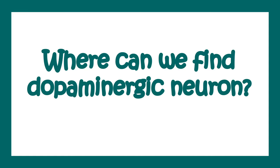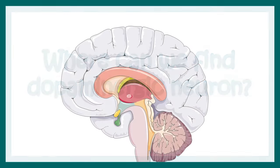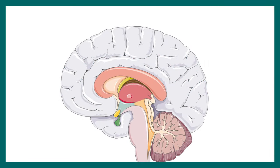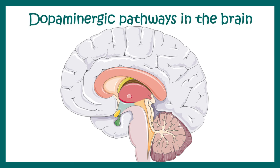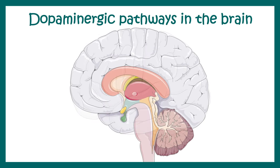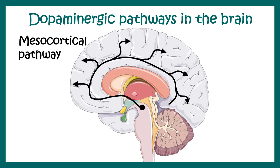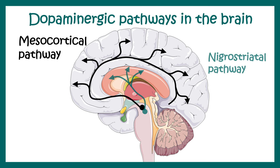Let's look at where we can find dopaminergic neurons in the brain. Dopaminergic neuronal cell bodies are found in the ventral tegmental area and also in the substantia nigra. All the pathways project towards either the cortex, known as the mesocortical pathway.